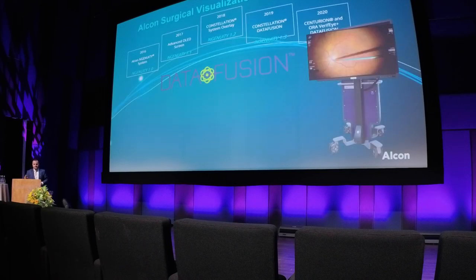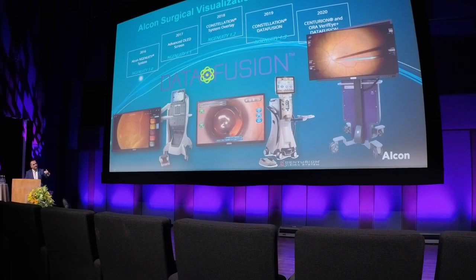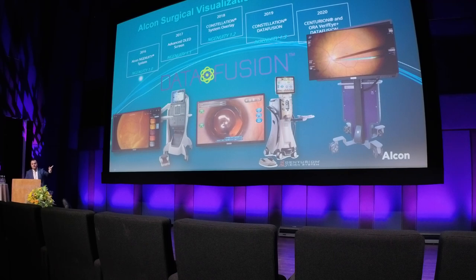Another important thing is the evolution of the system until version 1.4. First there was data fusion with Constellation; later, wireless data fusion and connection with the Centurion. Data fusion means we can control the Ingenuity color profiles and color channels through the pedal of Constellation or Centurion, and the link with Centurion is wireless — so less wires in the OR, which is important.